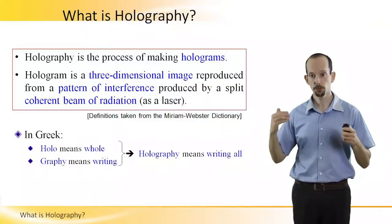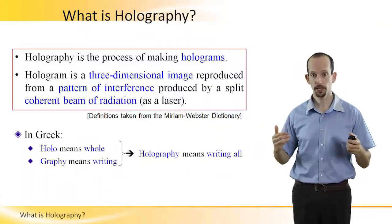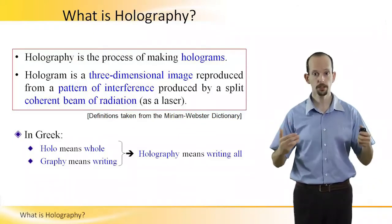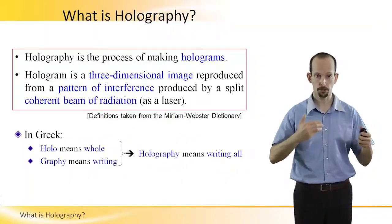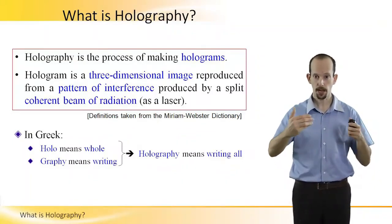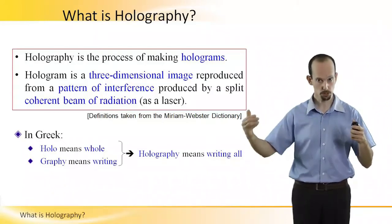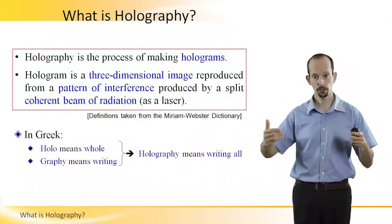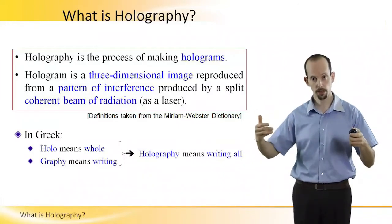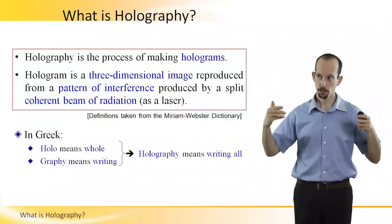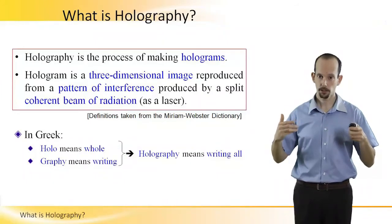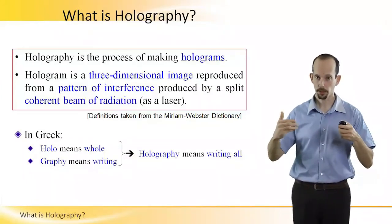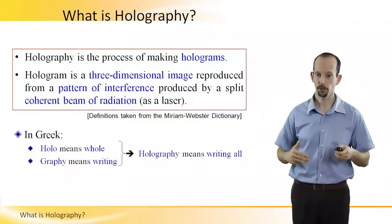It is produced by splitting a coherent beam of radiation, because we need the light source that is used — which is usually a laser — to have a certain property according to which the coherence length is larger than the difference between the two light beams creating the interference.